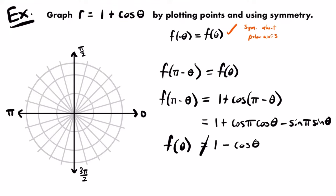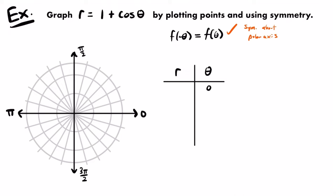Now let's find some polar coordinates to plot. We only need to work with values of theta from 0 to pi, since we know the graph is symmetric about the polar axis. I'll choose theta equals 0, pi divided by 4, pi divided by 2, 3 pi divided by 4, and pi. Plugging these into r equals 1 plus cosine theta: at theta equals 0, r equals 2; at pi divided by 4, r equals 1 plus square root of 2 divided by 2; at pi divided by 2, r equals 1; at 3 pi divided by 4, r equals 1 minus square root of 2 divided by 2; and at pi, r equals 0.